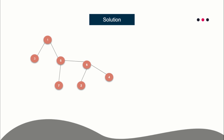So all of these connected components — you can see this has size two, this has size one, and this has size three. None of them have size greater than n/2, where n is seven, so none have size greater than three. This is your centroid.